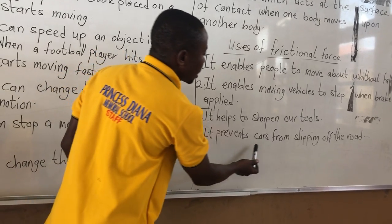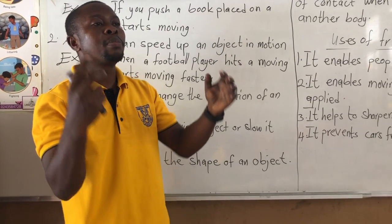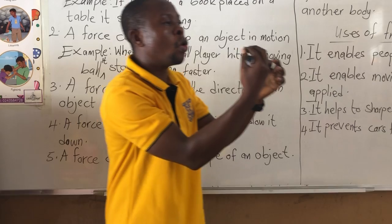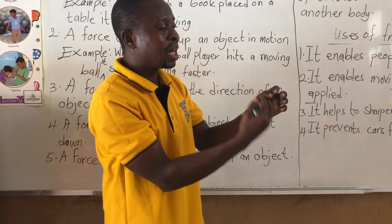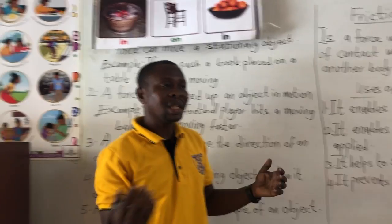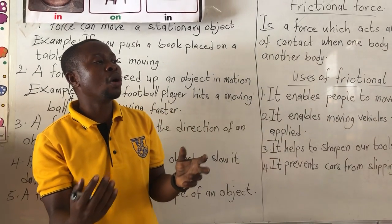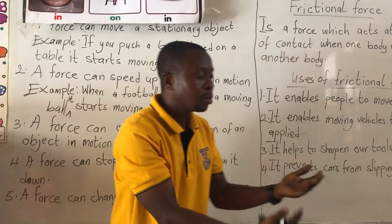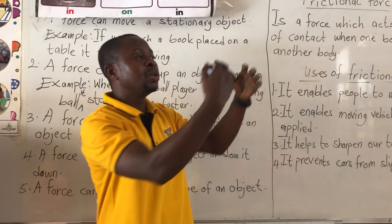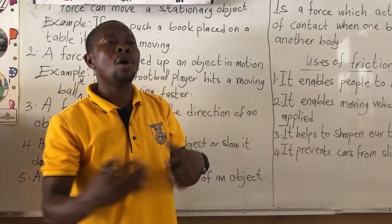The last use: it prevents cars from slipping off the road. It is the friction force between the tyres of the car and the ground that keeps the car on the road. When it is raining and you are speeding, if you don't take care, your car will slip off the road. Why? Because the rain on the road surface prevents the tyre of the car from having proper contact with the ground, thereby reducing friction, so there is less friction and the car slips off the road.